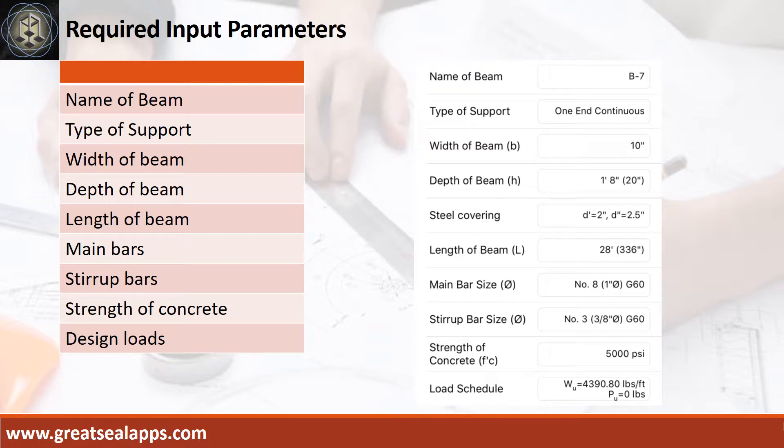Length of beam, 28 feet. Main bars, 1 inch diameter at grade 60. Stirrup bars, 3/8 inch diameter at grade 60. Strength of concrete, 5,000 PSI. And total load, 4,390.8 pounds per foot.